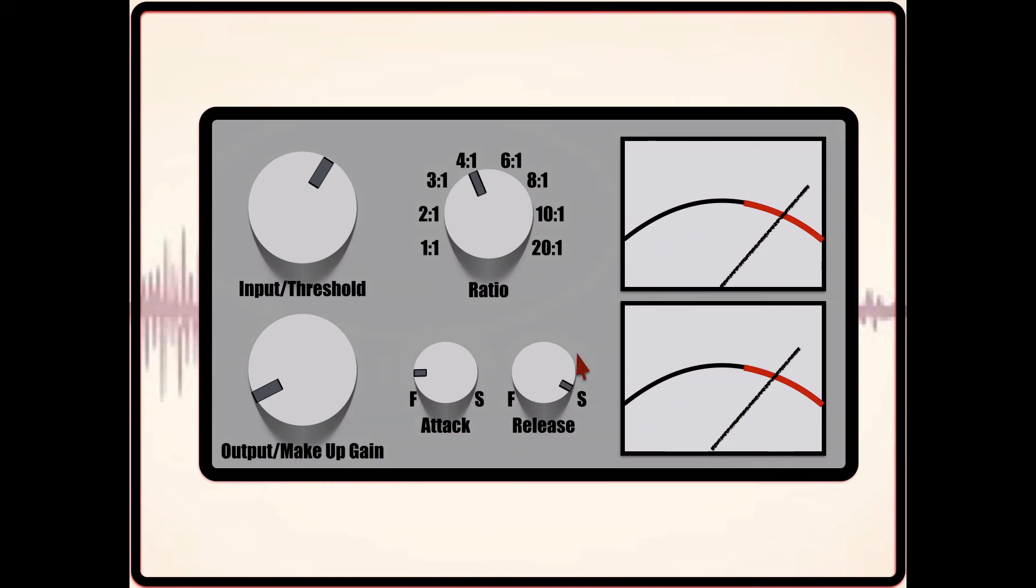Now, do the same for the release, except this time focus on the sustain of the sonic element. Slowly quicken the release time until you really start to hear a pump in the sustain. This will tell you where in the sound the compressor is beginning to release, and you can either dial it faster if you want a smaller part of the signal to be compressed, or slower if you want more of the signal to be compressed. Once again, make sure that you have the ratio and threshold up to a significant point so that you can really hear these adjustments. You can always bring them back down once you set your attack and release.